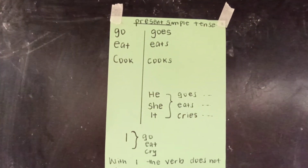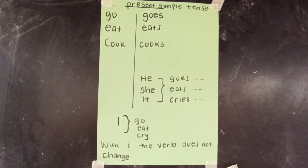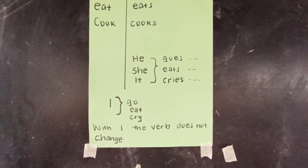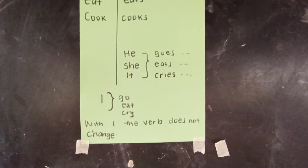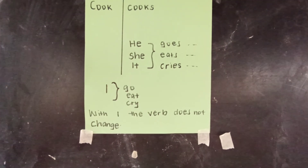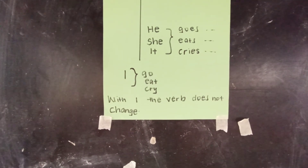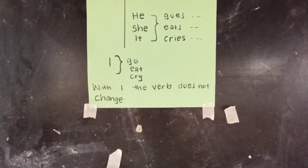Are we together? But when you're talking about yourself — like 'I' — the verb will not change. I cannot say 'I goes.' I cannot say 'I eats.' I cannot say 'I cries.' When you're talking about yourself, the verb does not change. Tell the person next to you that when you're using 'I,' the verb does not change. We say: I go, I eat, I cry. Is that right? Never forget this.